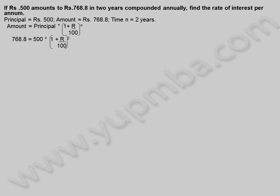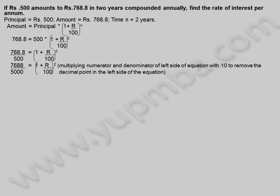768.8 is equal to 500 into 1 plus r by 100 whole square. Dividing both sides: 768.8 by 500 is equal to 1 plus r by 100 whole square. Multiplying by 10: 7688.8 by 5000 is equal to 1 plus r by 100 whole square.